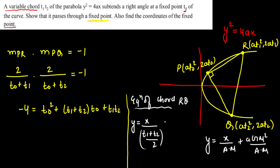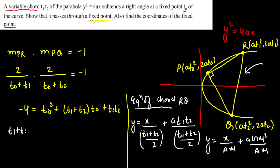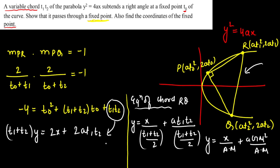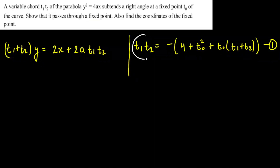So y = 2x/(t1+t2) + a·t1t2 / [(t1+t2)/2]. This common chord passes through a fixed point. Taking (t1+t2) as a factor, we can write the chord equation as (t1+t2)·y = 2x + 2a·t1t2. Now t0 is fixed, so I'm going to substitute the expression for t1t2 into this equation to convert everything in terms of t0, which will give us a form like L1 + λL2.